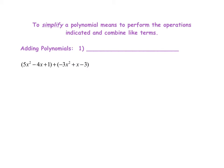First, let's make sure we understand the difference between simplifying an expression and solving an equation. If you look at this example, there is no equal sign, so we do not have an equation — we simply have an expression. Whenever you have an expression, you can use different operations to simplify a polynomial expression. We are going to simplify a polynomial by performing the operations indicated and combining like terms.